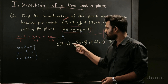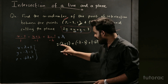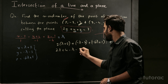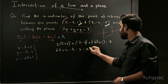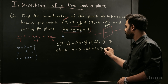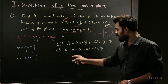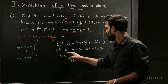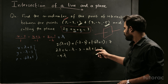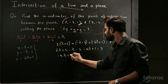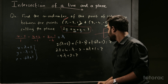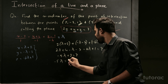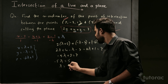Now we have the equation in terms of Lambda. Solving: 2 Lambda plus 4 minus Lambda minus 3 minus 6 Lambda plus 1 equals 7. Combining Lambda terms: 2 Lambda minus Lambda minus 6 Lambda gives minus 5 Lambda. Constants: 4 minus 3 plus 1 equals 2. So minus 5 Lambda plus 2 equals 7, giving minus 5 Lambda equals 5, therefore Lambda equals negative 1.